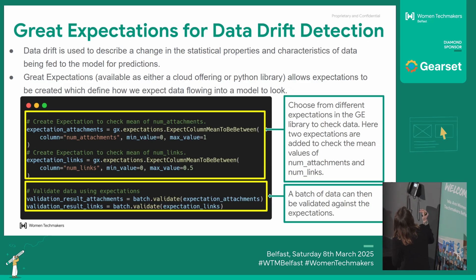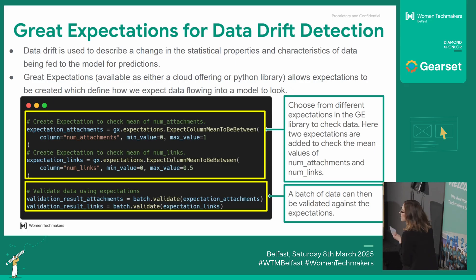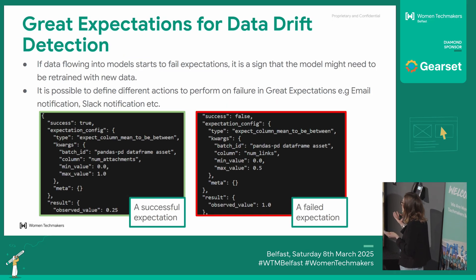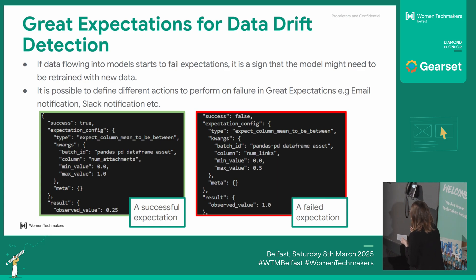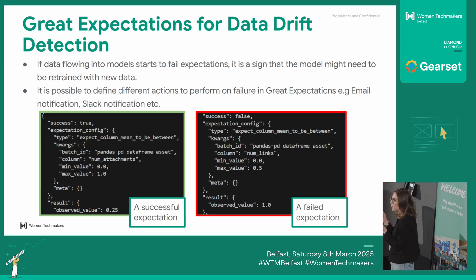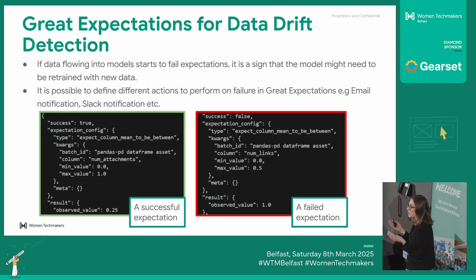There are a couple of examples here — these are what the library calls expectations. I profile the data and say: I expect the number of attachments in these emails to be between zero and one, for example. Then I run my data through that, and it'll tell me if it passes the checks or not — if it passes, success; if it fails, you get a failure. And then I define some kind of action to happen on failure, so it could be an email sent to the team that manages this model. Then they can take action, and most typically it means a model retrain — retrain on the new data and update the model.